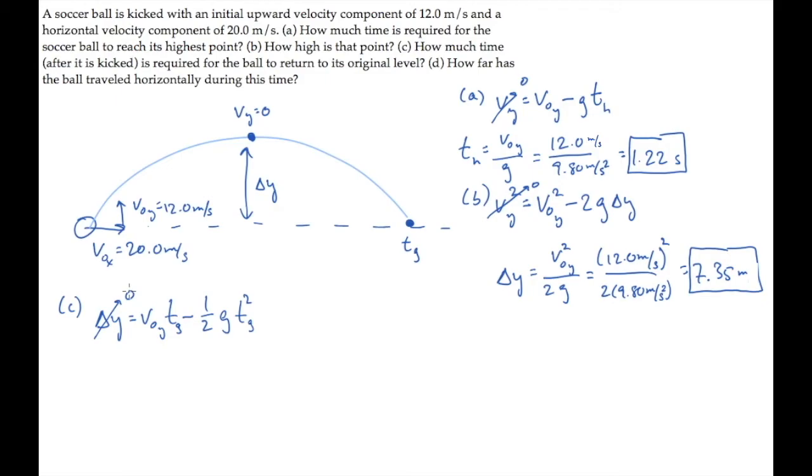Knowing that time is not equal to zero, we can cancel one of the times from this equation and rewrite to get this, and then solve for t_g. It equals 2 times v_0y divided by g, and you notice that this is twice the time it took the ball to get to its highest point. The time to get back to its original level is twice the time to get to the highest point, and that works out to 2.45 seconds.